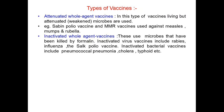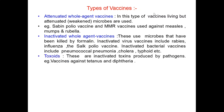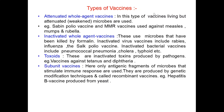Inactivated bacterial vaccines include pneumococcal pneumonia caused by Streptococcus pneumoniae bacteria, cholera, typhoid, etc. Then toxoids: these are inactivated toxins produced by pathogens. For example, vaccines against tetanus and diphtheria are of this type. Then subunit vaccines: here only antigenic fragments of microbes that stimulate immune response are used. They are produced by genetic modification techniques and called recombinant vaccines. For example, hepatitis B vaccine produced from yeast.